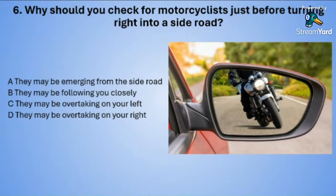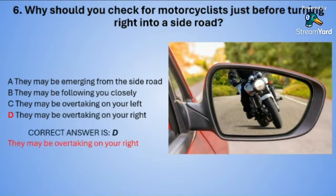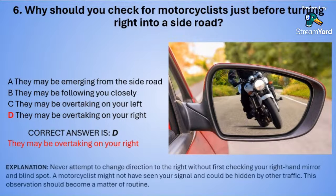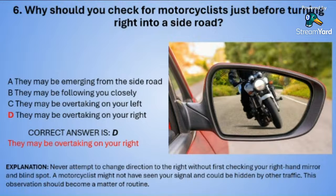The correct answer is D — they may be overtaking on your right. Never try to change direction to the right without first checking your right-hand mirror and the blind spot. A motorcyclist might not have seen your signal and could be hidden by other traffic. This observation should become a matter of routine.